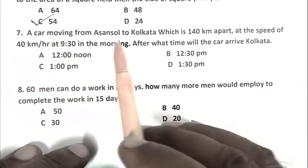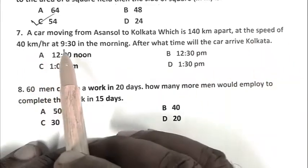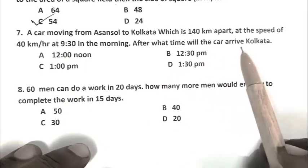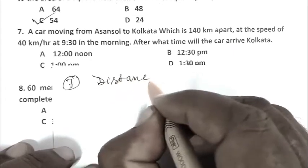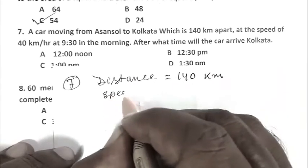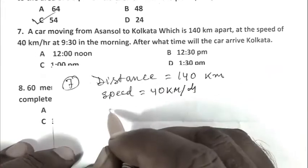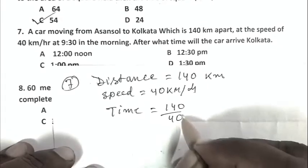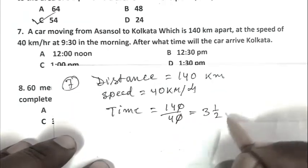Question number 7: A car moving from Asansol to Kolkata which is 140 kilometers apart at a speed of 40 kilometers per hour at 9:30 in the morning. Distance 140 km, speed 40 km per hour.